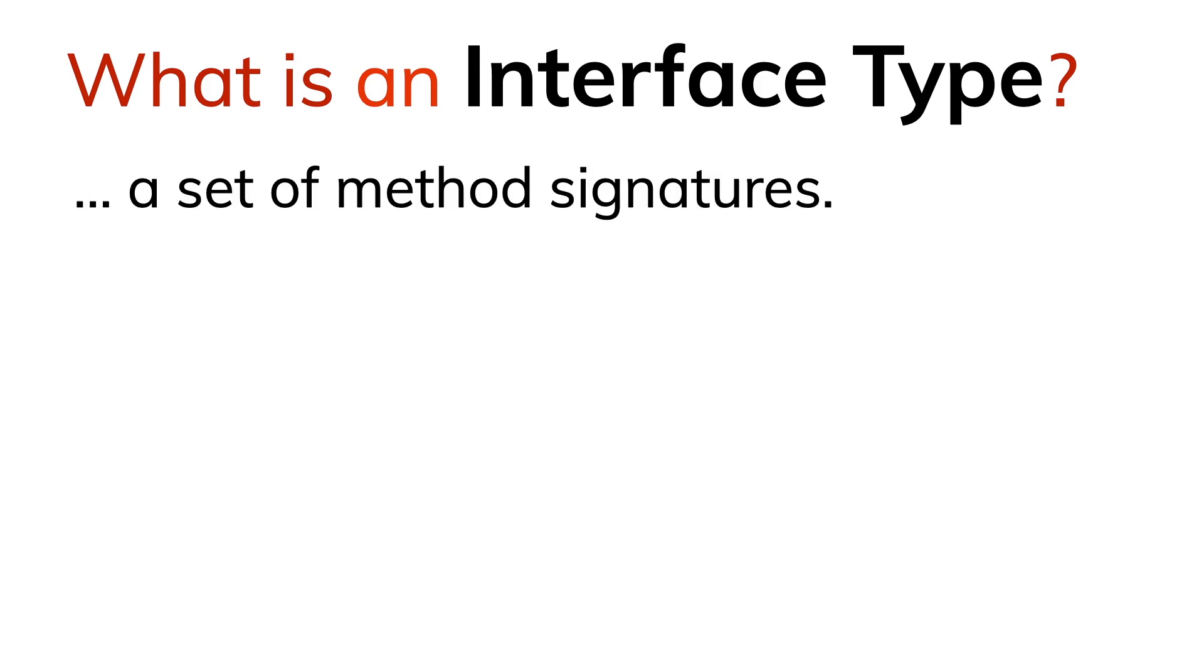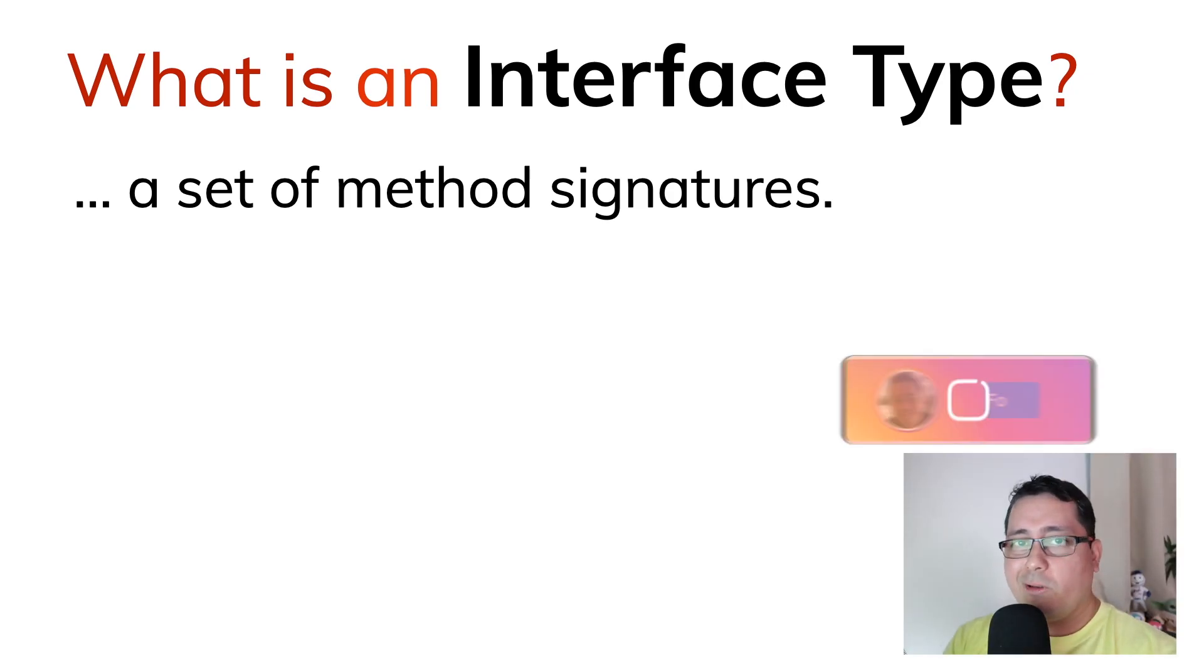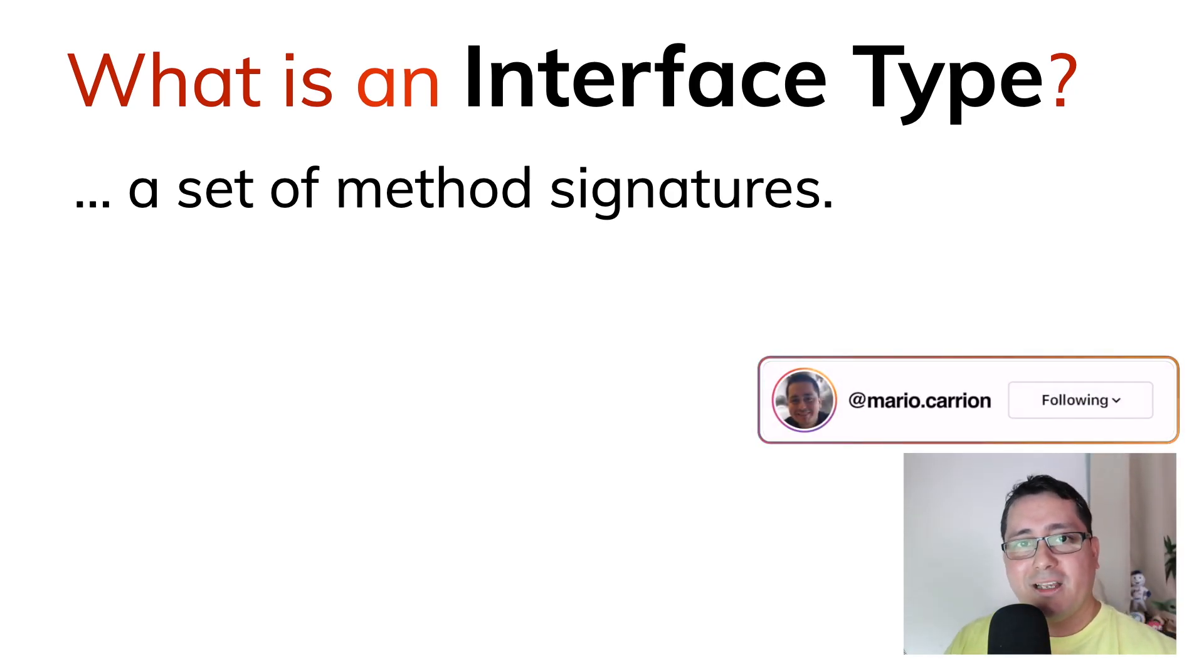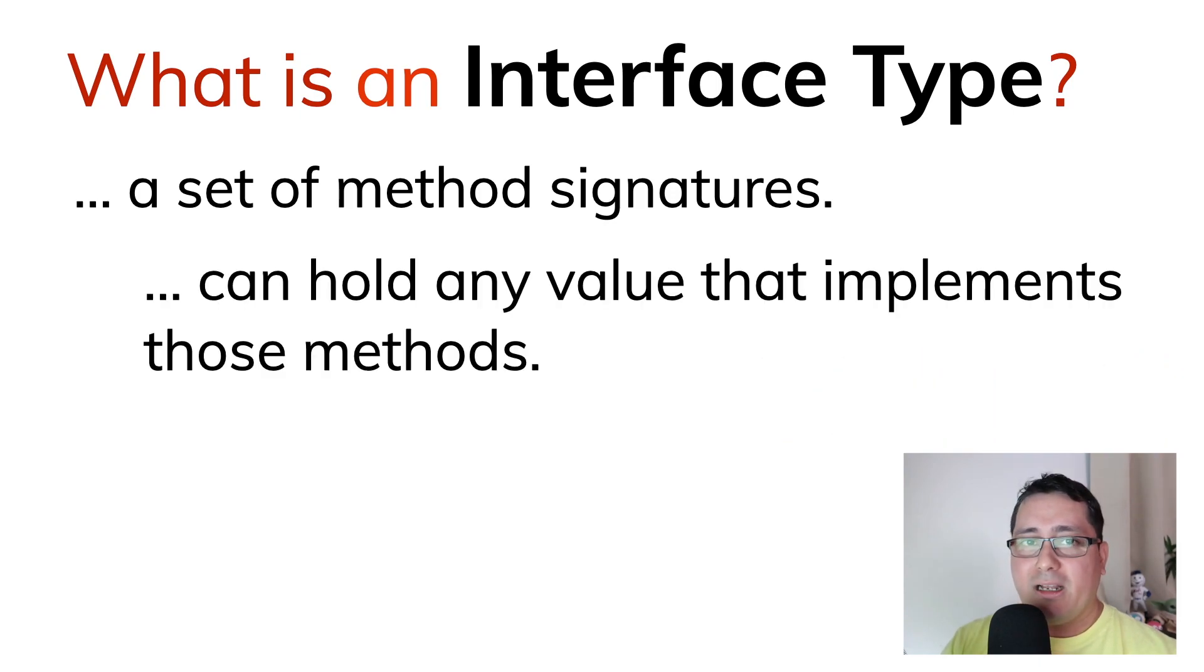An interface type is a set of method signatures. It could be 1, it could be 100, it's up to the interface type itself, and it can hold any value that happens to implement those methods. And again, I want to highlight that we are talking about methods.